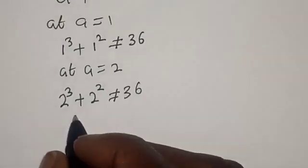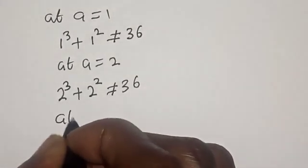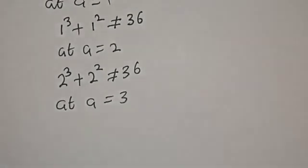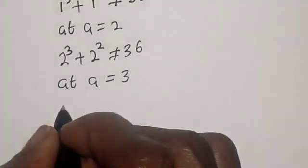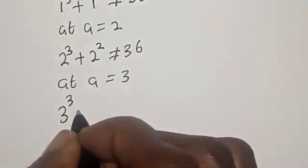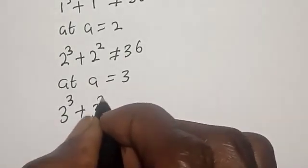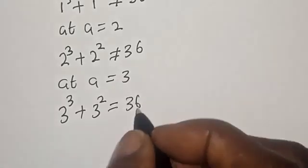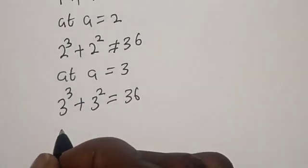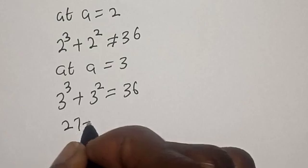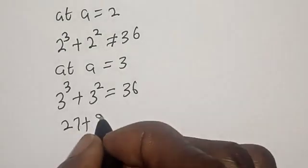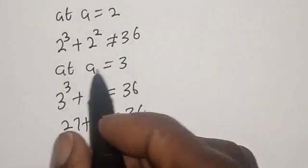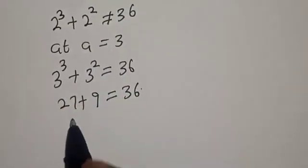Now let's see at A is equal to 3. Three raised to power 3 plus three squared — that is 27 plus 9 — is equal to 36. So A is equal to 3 is one of the roots.